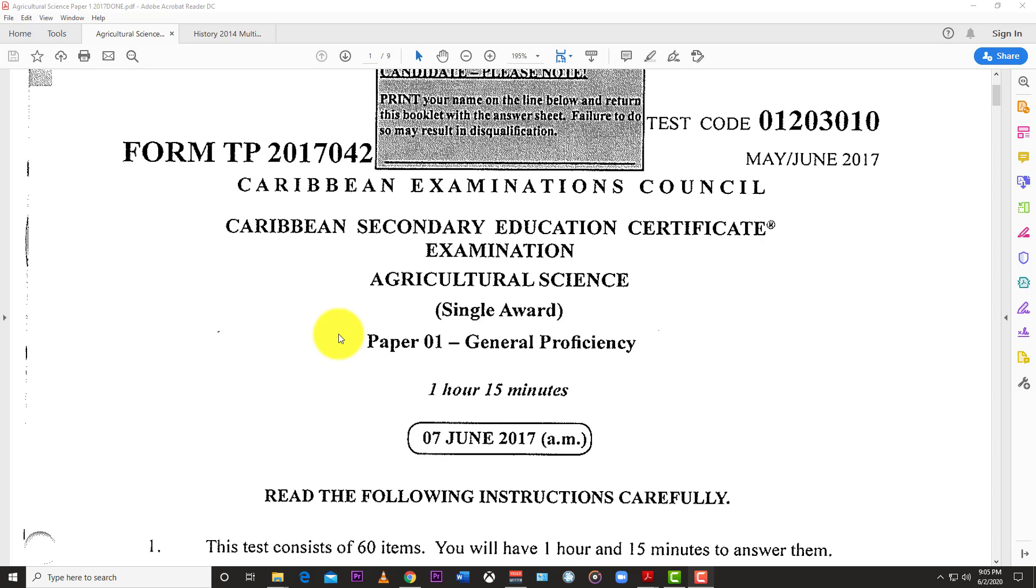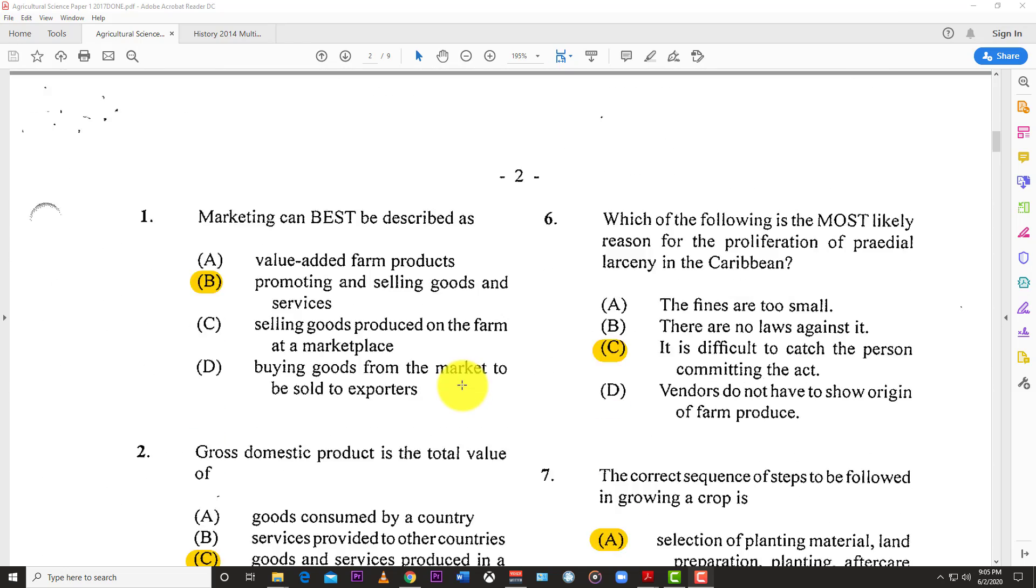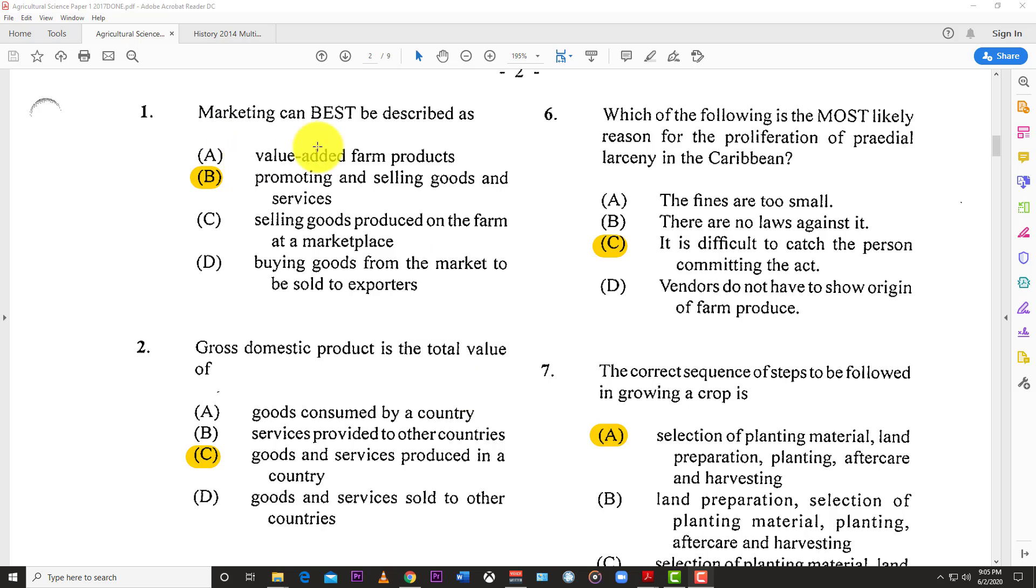Welcome back to Learn SKN. Today we have an Agricultural Science single awards CSEC paper for you, paper one from May June 2017. Let's not waste any time and just jump right in.